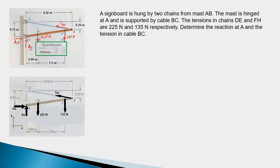We will write the moment equation first. Taking moments about point A eliminates the two reaction components Ax and Ay, leaving only TBC as the unknown — giving us the answer directly. Once TBC is known, it can be substituted into the force summation equations to find Ax and Ay. Before writing the moment equation, we calculate distance BC: sqrt(2.52² + 0.39²) = 2.55 m.